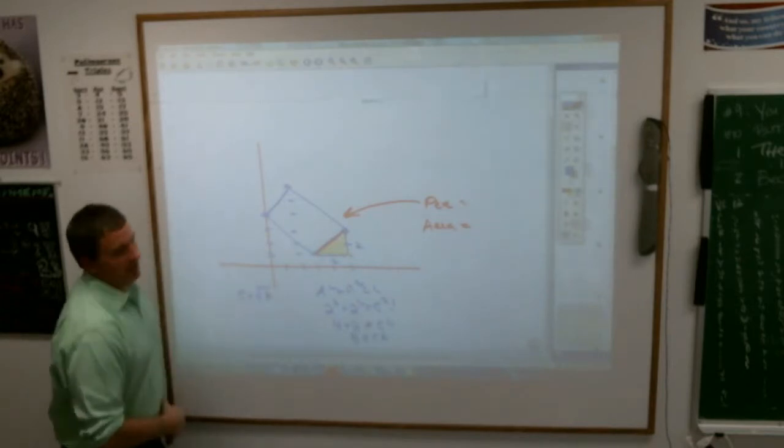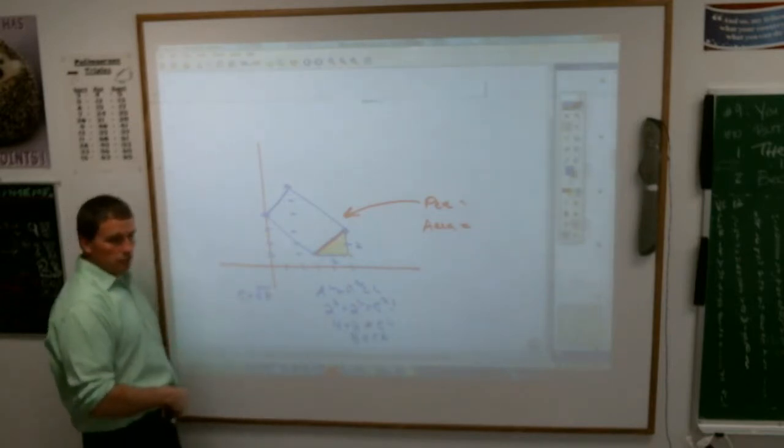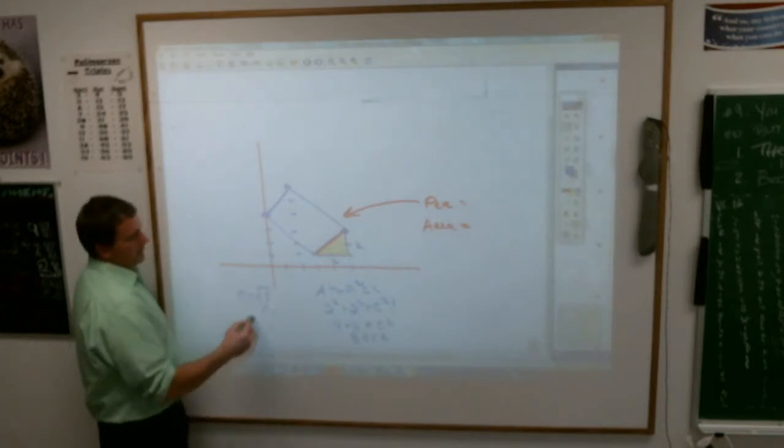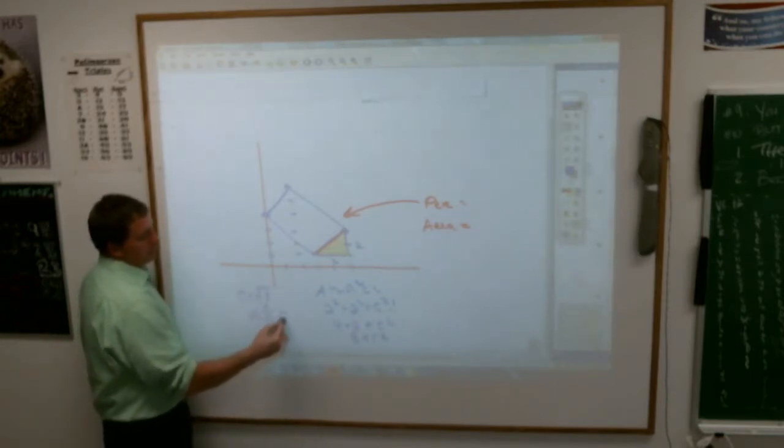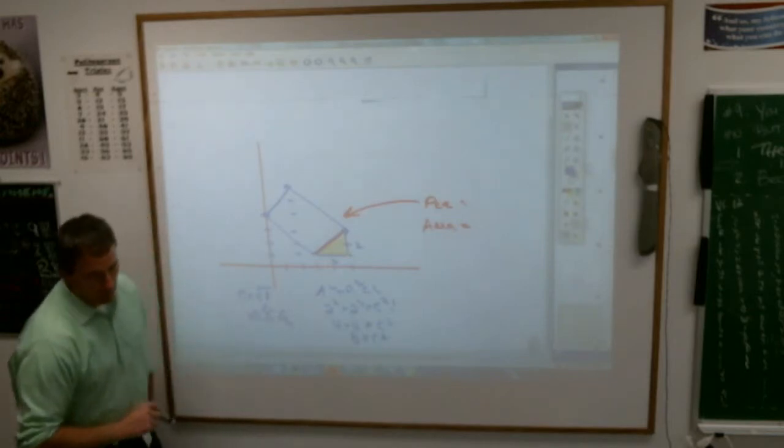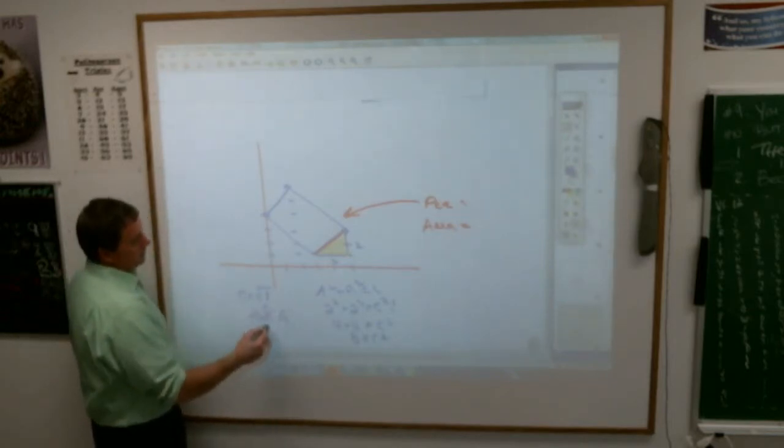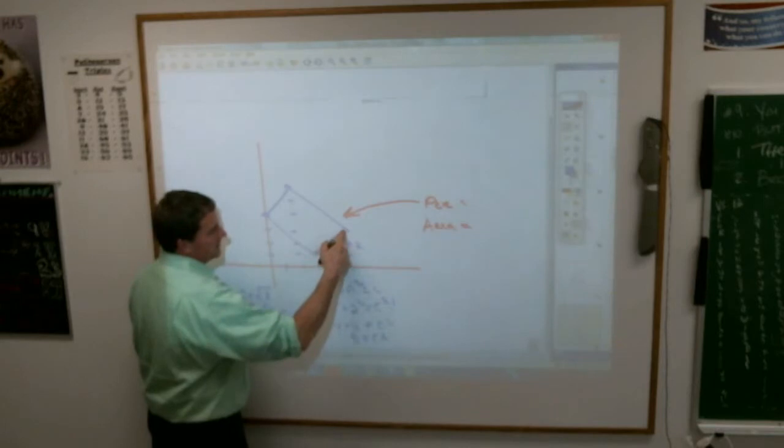And again, that's close to being right, except it can be simplified. The square root of 8 is the square root of 2 times the square root of 2 times the square root of 2, which is 2 times the square root of 2. So this side right here is 2 times the square root of 2.